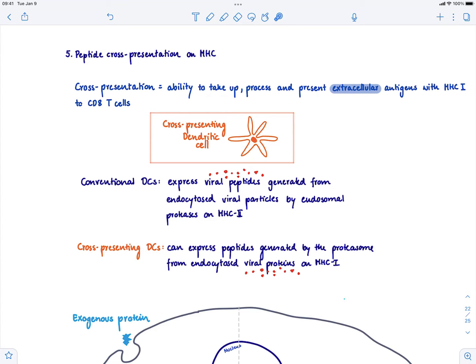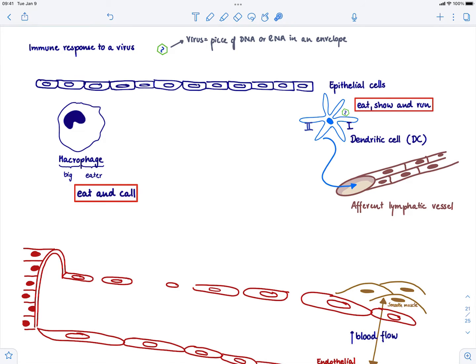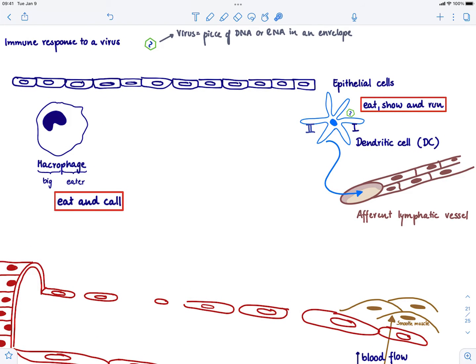In order to really understand this, we need to think about what happens when we're infected with a virus. I've drawn here a very similar picture to how we started talking about bacterial infections. Now we're going to apply this and modify it towards what's going to happen when we are infected with a virus. As you know, a virus is just a piece of RNA or DNA in an envelope.